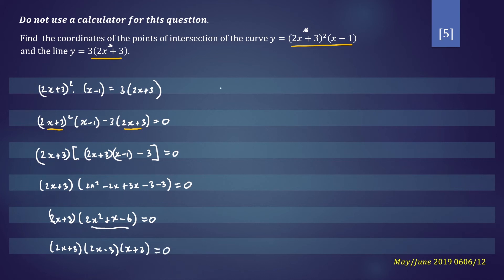So by the null factor law, x will be equal to negative 3 on 2, 3 on 2, and negative 2. So these are the x-coordinates of your intersection points.